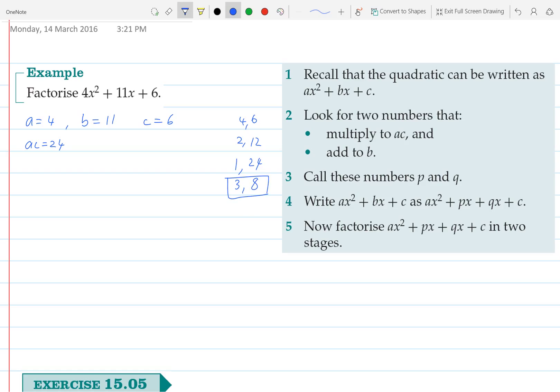So those are going to be our two numbers, so p and q. So p equals 3 and q equals 8. In our next step it tells us to write it as ax² + px + qx + c. So we're going to write our original equation: instead of 11x we're going to write 3x + 8x + 6.